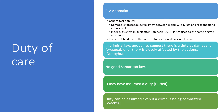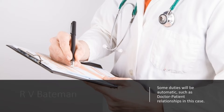A defendant may have assumed a duty, as seen in Ruffell, and a duty can be assumed even during the commission of a crime. A duty can also arise from a state of affairs. The case of Bateman is useful as authority where a duty of care existed between doctors and patients — some duties are automatic and already established.